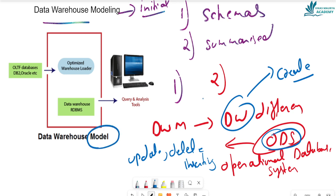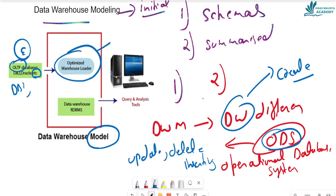After data warehouse modeling, there are three things. The first is Extraction — we take data from multiple sources such as ODS, LTF database, DB2 database, Oracle, and other locations. After taking data, we load it into an optimized data warehouse, which is a location where data is stored permanently. This is called the optimized warehouse loader.